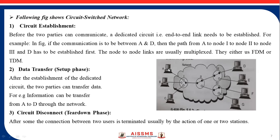If A wants to send data to D, first A will send a message to switch 1, then switch 1 will send a message to switch 2, then to switch 3, and switch 3 will inform receiver D that A wants to communicate. If D sends an acknowledgement to node A, then the path will be established between A and D via switches 1, 2, and 3. Once the connection is established, node A will send data to node D. They either use FDM or TDM techniques.